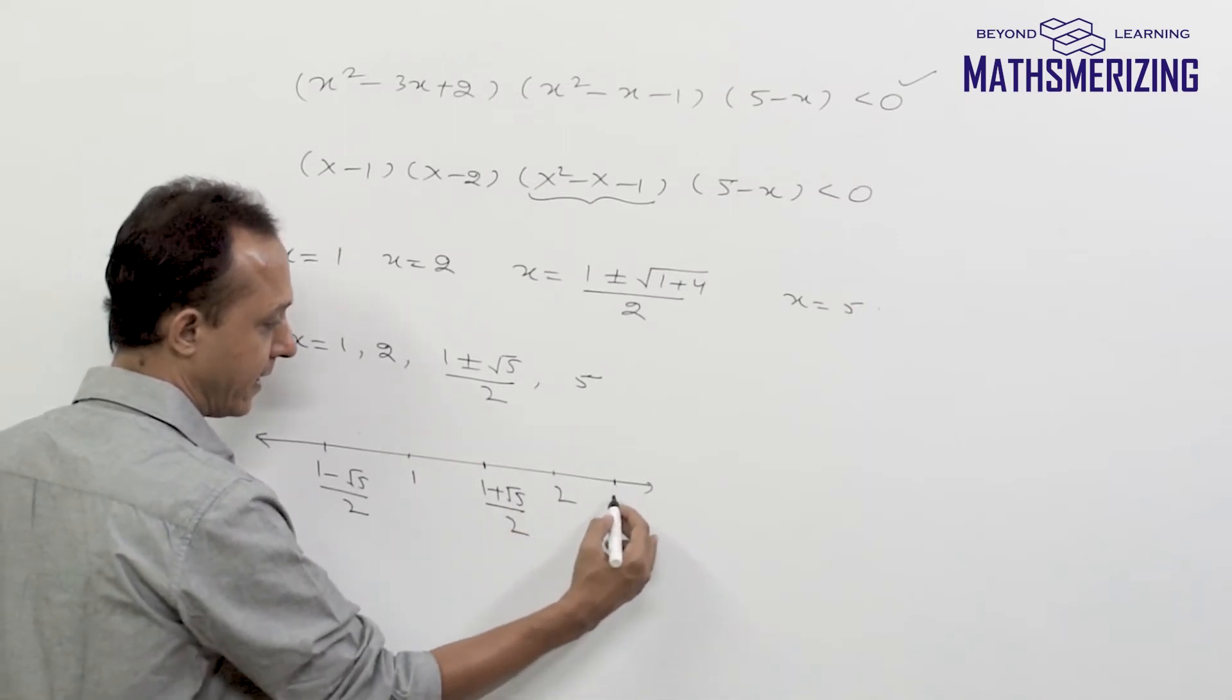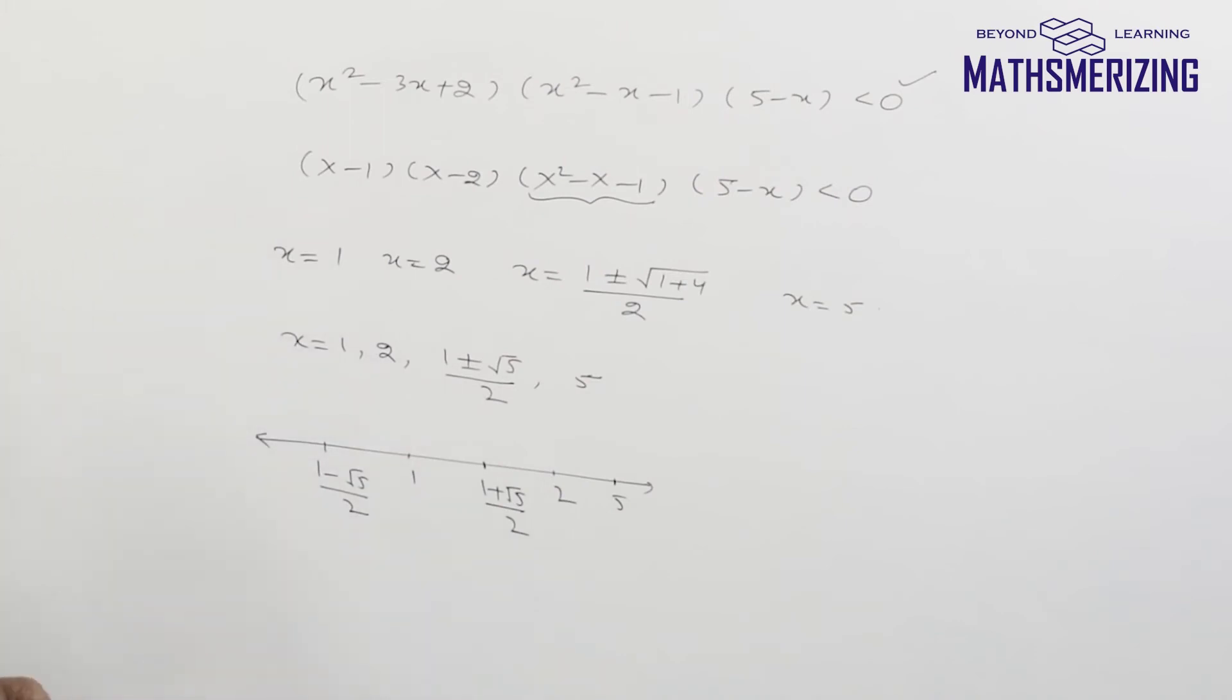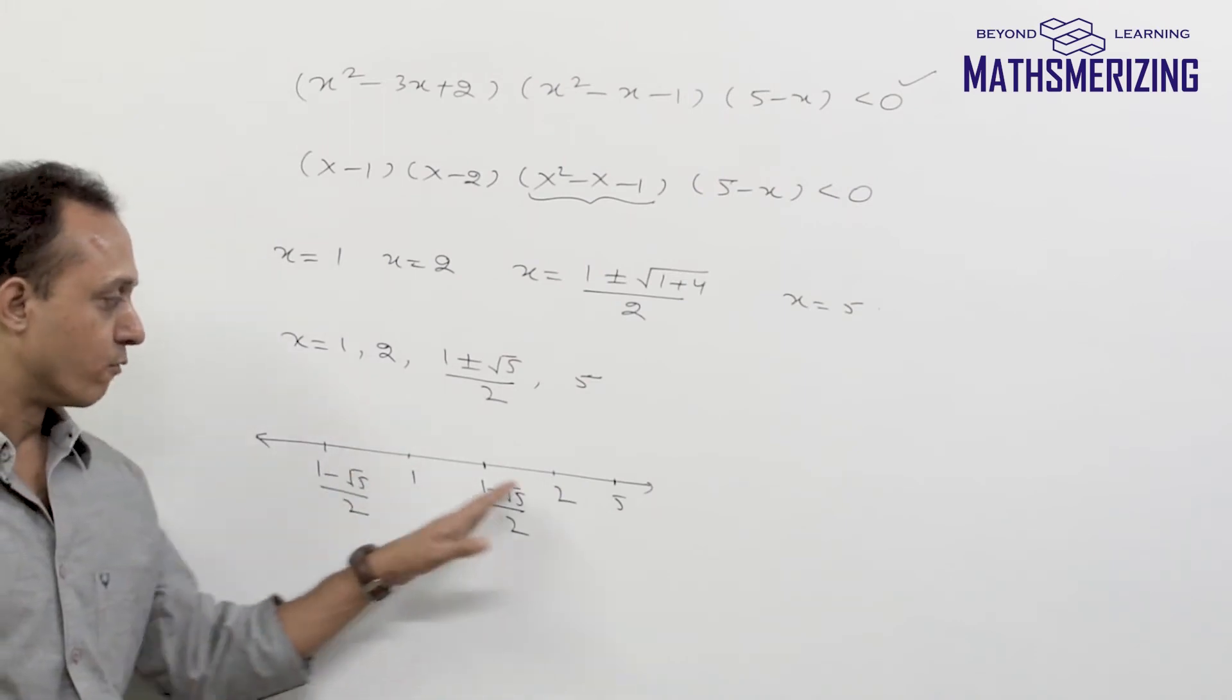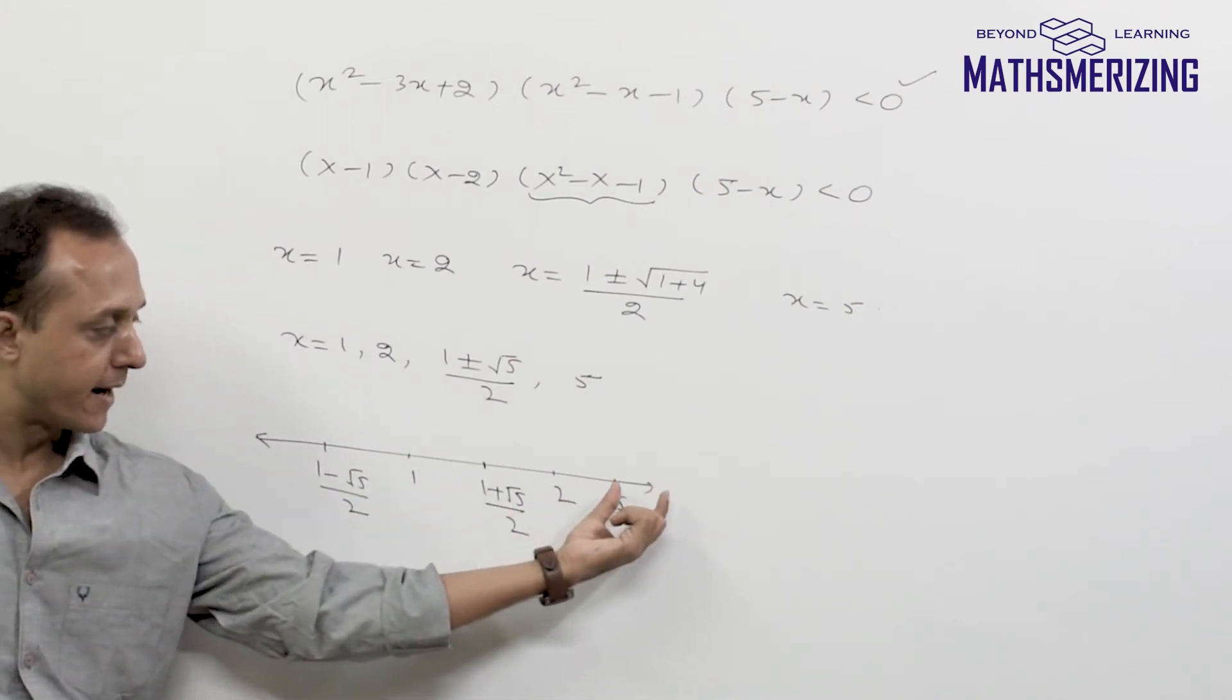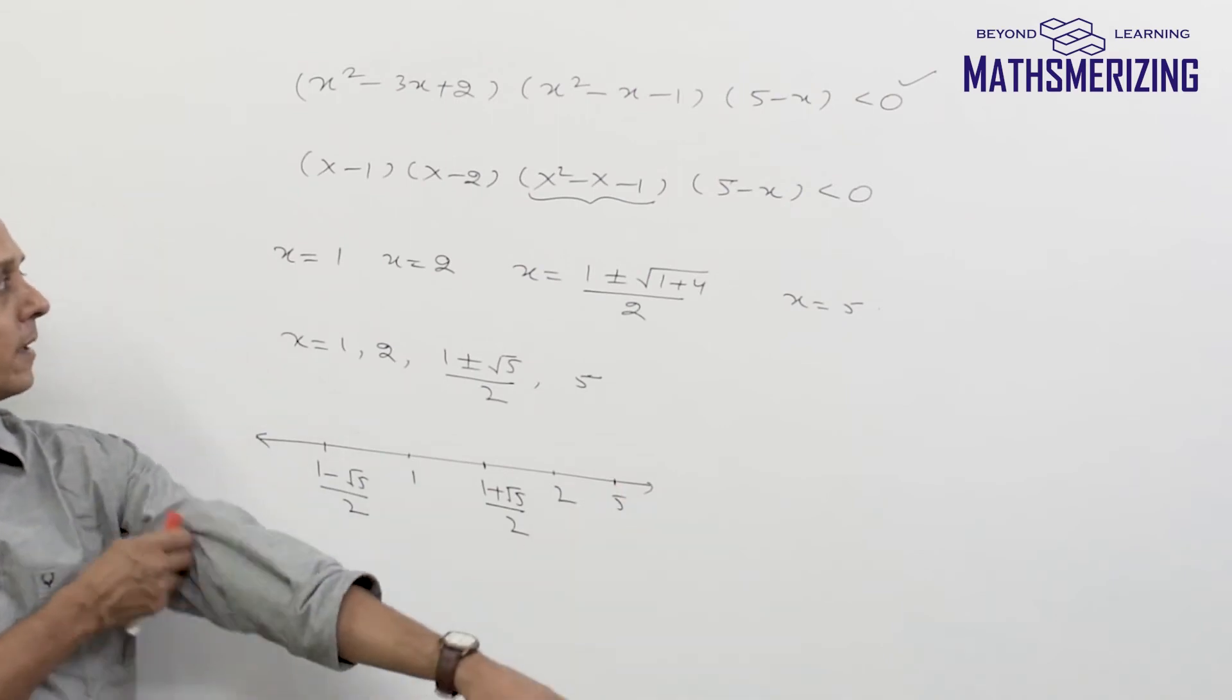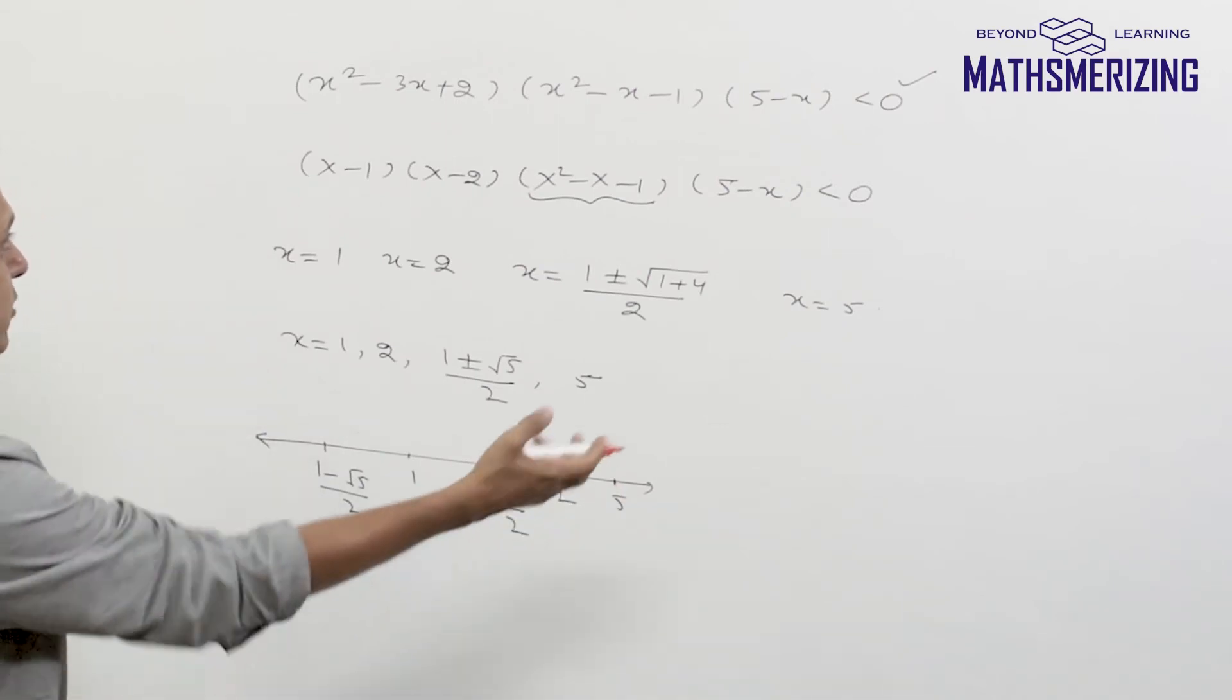Followed by 2, and then finally it will be 5. So I've represented all the 5 roots on a number line. Now I need to find the sign of the rightmost interval.